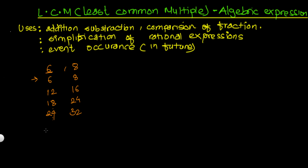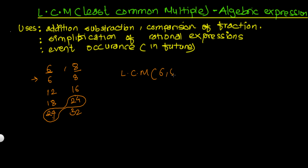The multiples of 6 are 6, 12, 18, 24, and so forth. For 8 they are 8, 16, 24, 32, and so forth. The least common multiple — the smallest value common to both lists — is 24. If we move forward we can find other common terms, but we are looking for the least, so the LCM of 6 and 8 is 24.